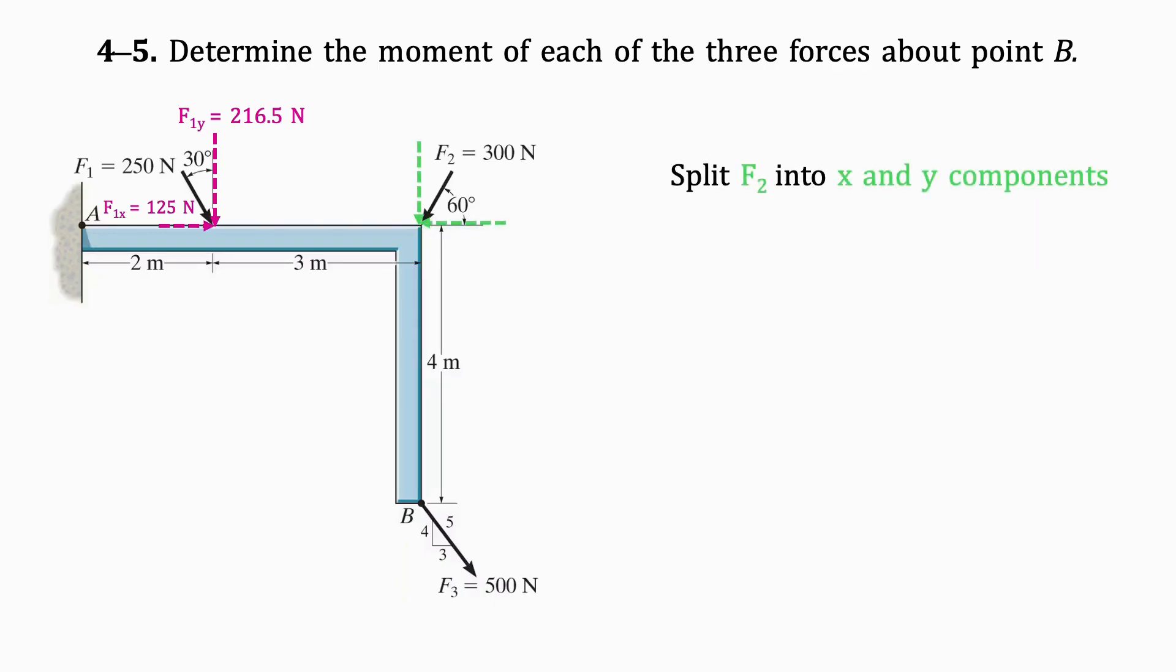Then, we split F2 into X and Y components using the given angle. By doing this, we get F2Y equals 259.8 Newtons and F2X equals 150 Newtons.